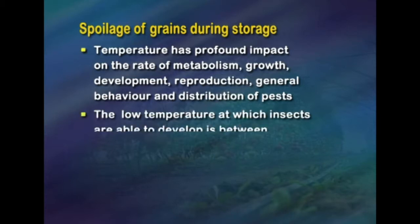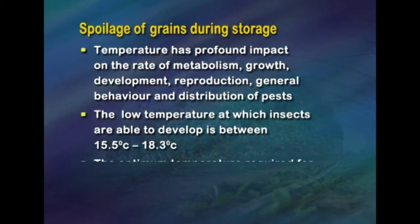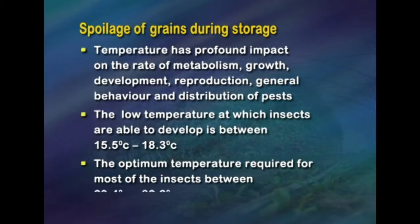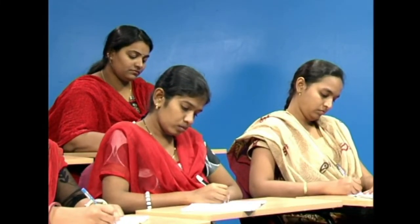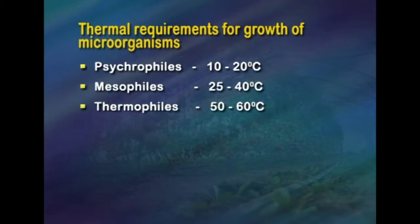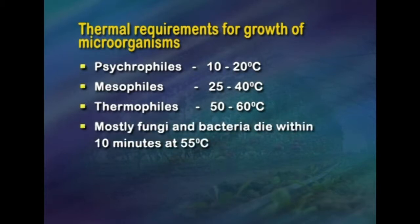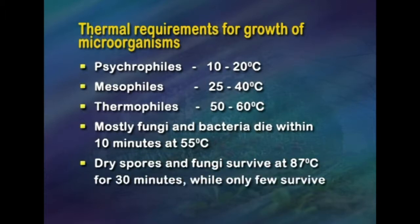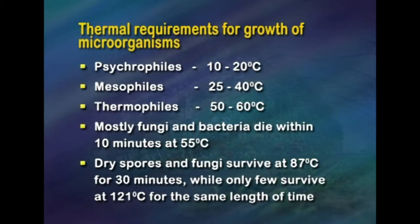The low temperature at which insects are able to develop is between 15.5 to 18.3°C. The optimum temperature required for most insects is between 29.4°C to 32.2°C. The fatal high temperature for insects ranges from 50 to 56°C. For microorganisms, thermal requirements differ for growth and are commonly classified as: psychrophiles 10 to 20°C, mesophiles 25 to 40°C, and thermophiles 50 to 60°C. Most fungi and bacteria die within 10 minutes at 55°C; dry spores of fungi survive at 87°C for 30 minutes, while only few survive at 121°C for the same length of time.